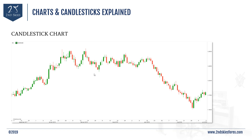Compared to the open high low close charts, candlesticks visually better show the live price action movements by expanding and contracting the candlestick's body, which is the filled rectangle in the middle that you see on each bar. As price moves up and down, this body of the candlestick is expanding and contracting, which is a very good visual representation of the price movement.